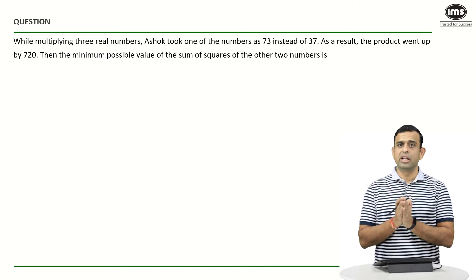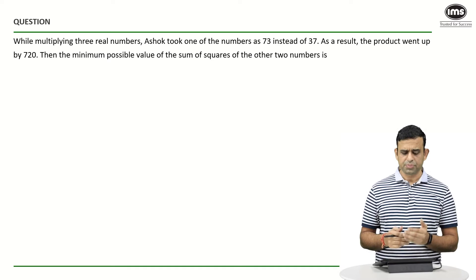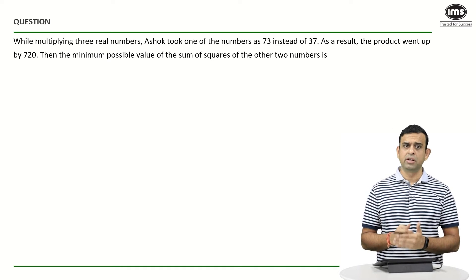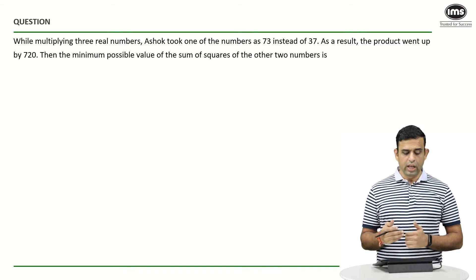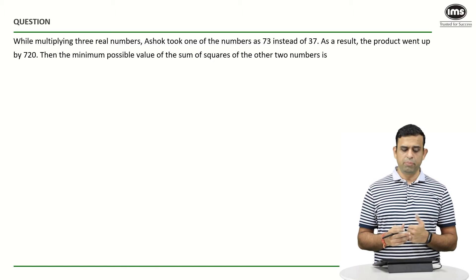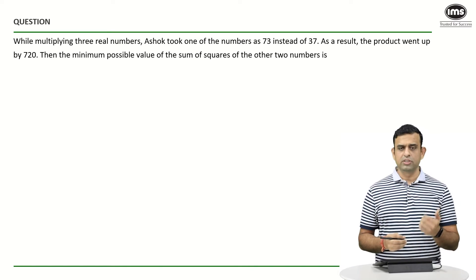As a result, the product has went up by the number 720. And the objective is to find out what is the minimum possible value of the sum of the square of the other two numbers.